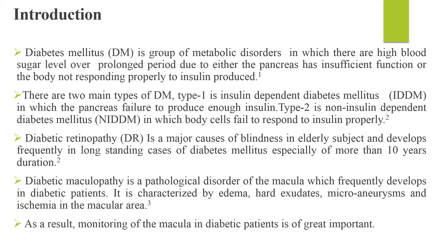As we know, diabetes mellitus is a group of metabolic disorders in which there is a high blood sugar level over a prolonged period, due to either the failure of the pancreatic cells to produce insulin, or due to the body not responding properly to insulin produced. Type 1 is called insulin-dependent diabetes mellitus, in which there is an insufficient function of the pancreatic cells with failure to produce enough insulin.